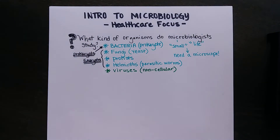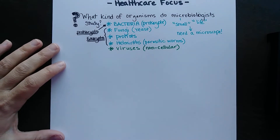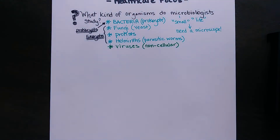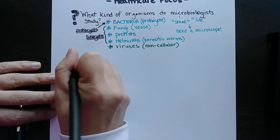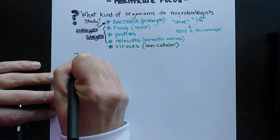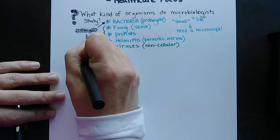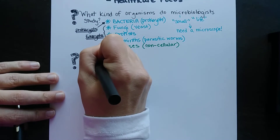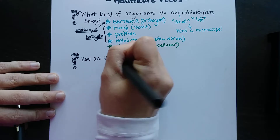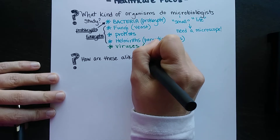Now I'm going to talk about the way these different kinds of organisms are grouped. We'll look at basically two or three domains and then six groupings. Question number two is: how are these organisms alike and how are they different?